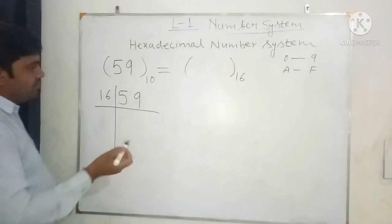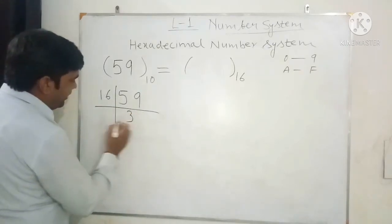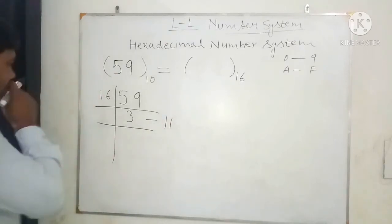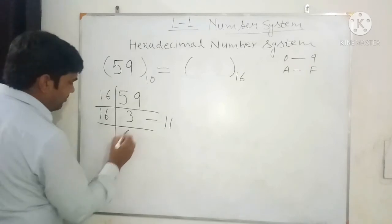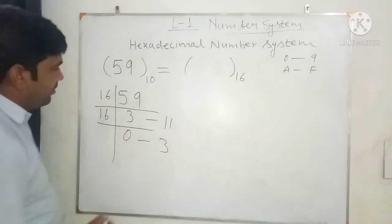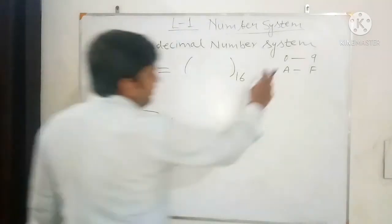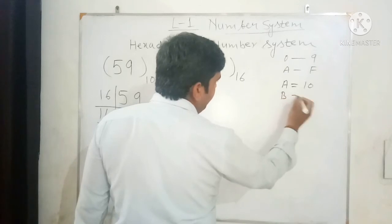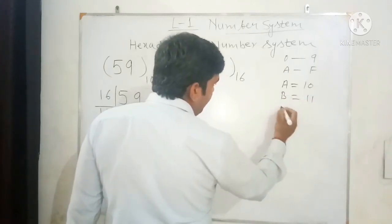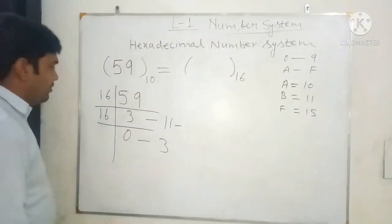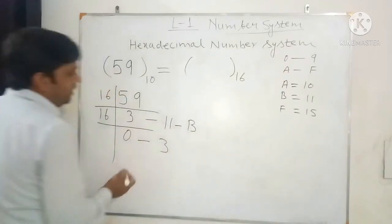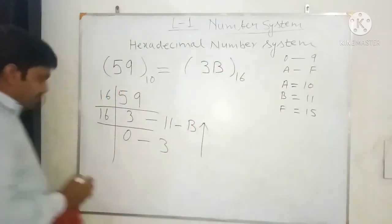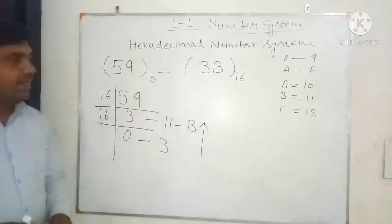59 divided by 16 gives quotient 3 and remainder 11. Since 3 divided by 16 gives remainder 3, and the remainder 11 is represented as B in hexadecimal (since A represents 10, B represents 11, and F represents 15), reading from bottom to top the hexadecimal equivalent of 59 is 3B.